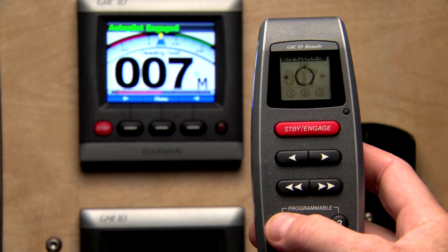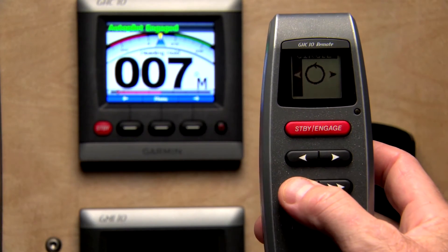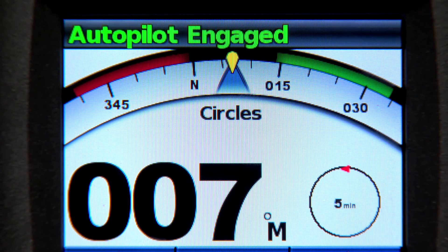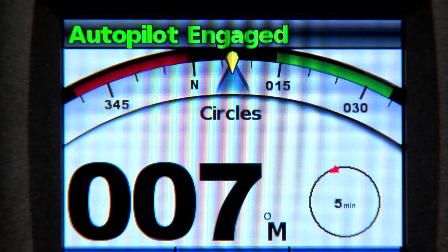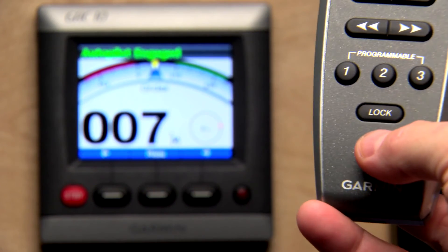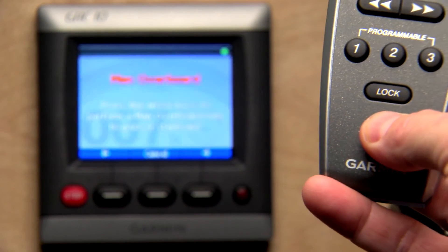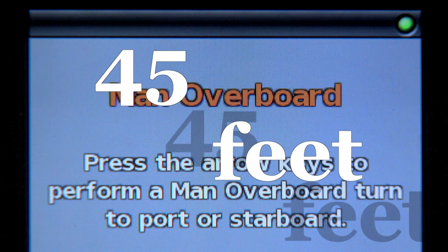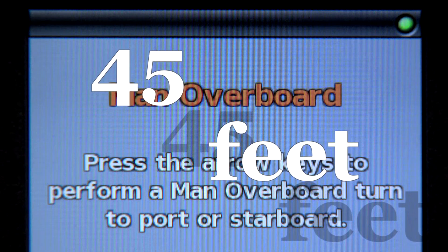Step three is all about adding those optional controls or accessories you might want. For example, if you'd like the freedom to move about on deck without being tied down, Garmin's optional GHC10 wireless remote lets you control the autopilot from distances up to 45 feet away.